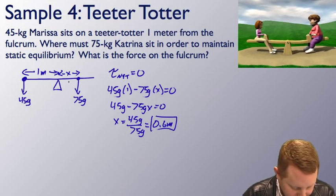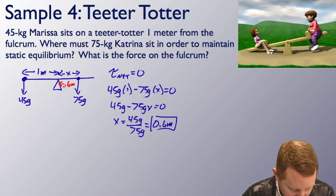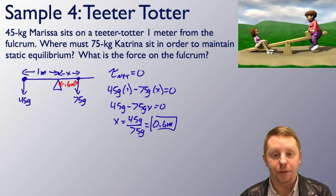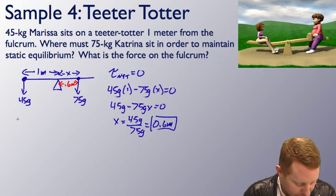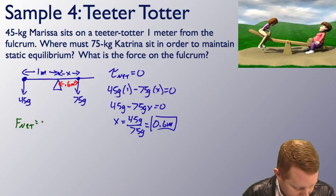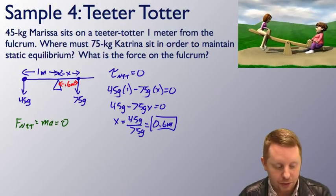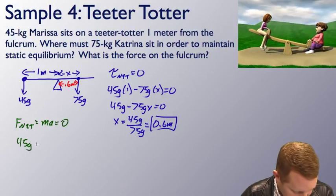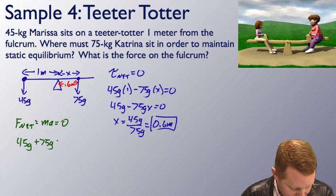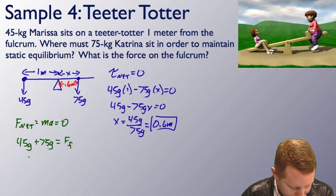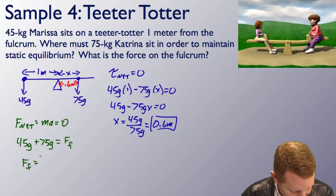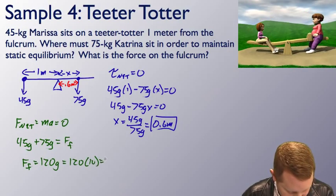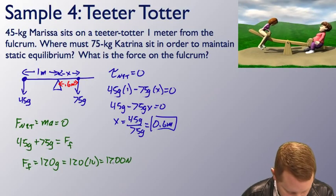So Katrina must sit 0.6 meters from the fulcrum to be in static equilibrium. And what's the force on the fulcrum? Well, we can go to Newton's second law there. Net force, which is equal to mass times acceleration, must be equal to zero. So our force is down. We have 45 g from Marissa. And we have 75 g from Katrina. And pointing up, we have the force of the fulcrum. So the force of the fulcrum is just going to be 120 g, or 120 times 10 meters per second squared, which is 1,200 newtons.